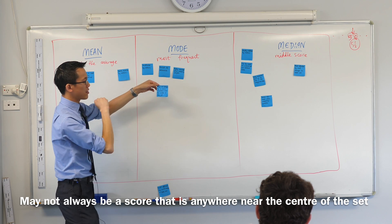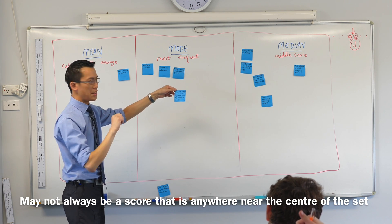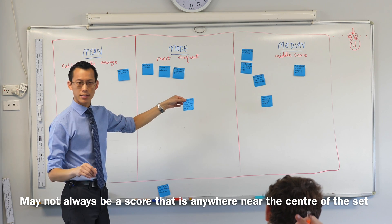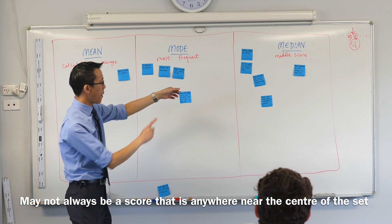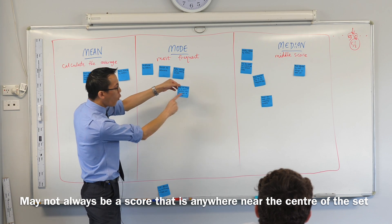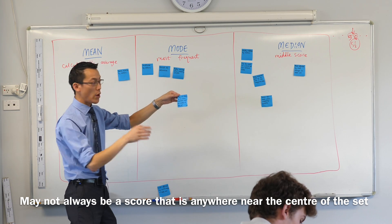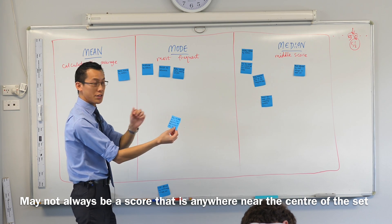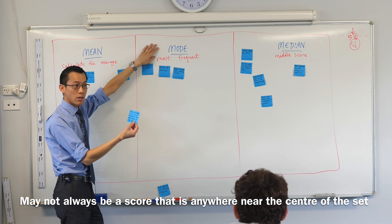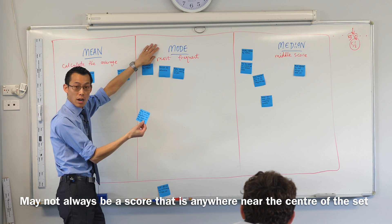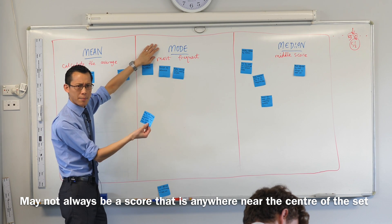May not always be a score that's anywhere near the center of the set. Do we think that's the mode? Can someone give me an example of where that might happen or how that might happen?